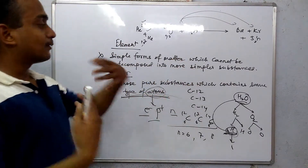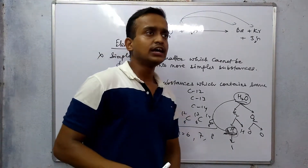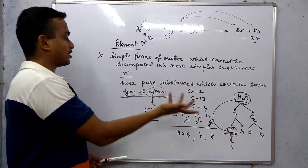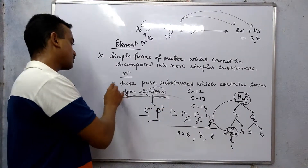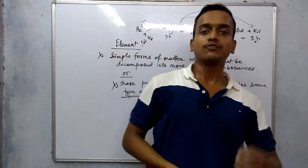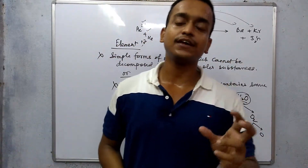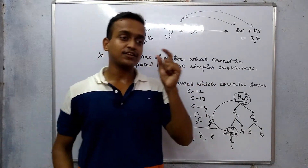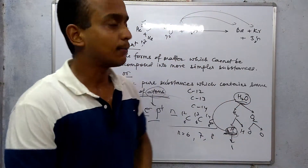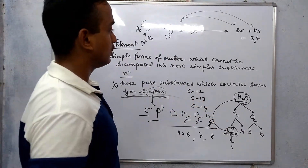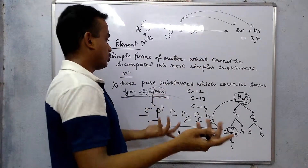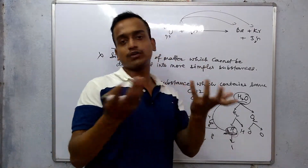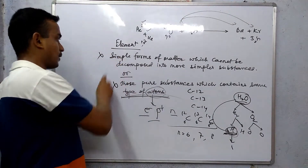Same type of atoms — elements are those chemical species which have a unique place, a significant place in the periodic table. In that significant place in the periodic table, you can deal with isotopes. No worries. This is your element.